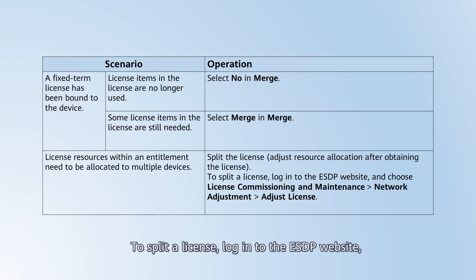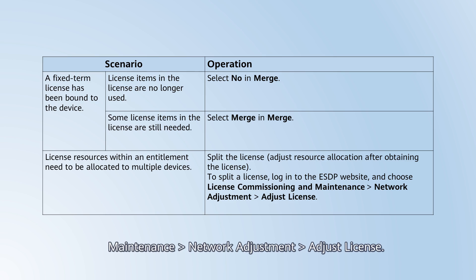To split a license, log in to the ESDP website and choose License Commissioning and Maintenance, Network Adjustment, Adjust License.